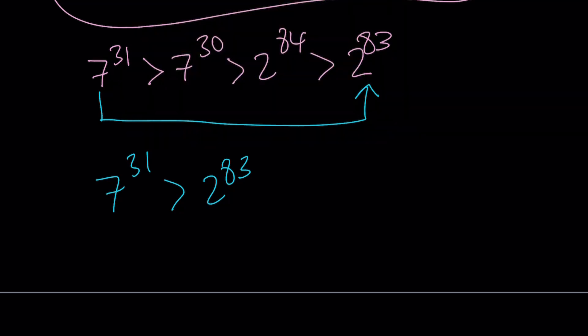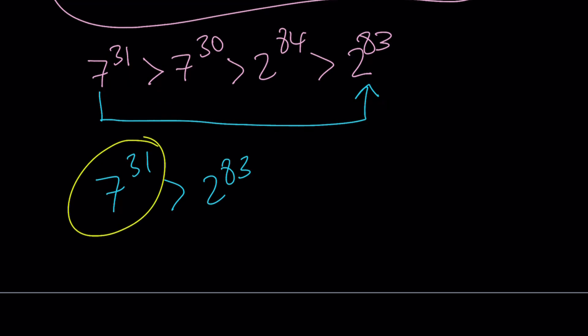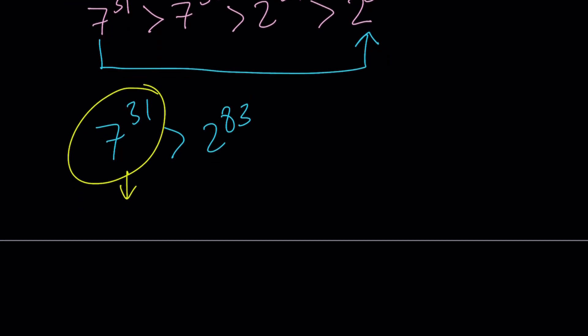Now, if you look at the numerical values of these numbers, 7 to the power 31 is approximately 1.58 times 10 to the power 26. And 2 to the power 83 is going to be approximately 9.67 times 10 to the power 24. So that's kind of close to being maybe about 10 times larger.